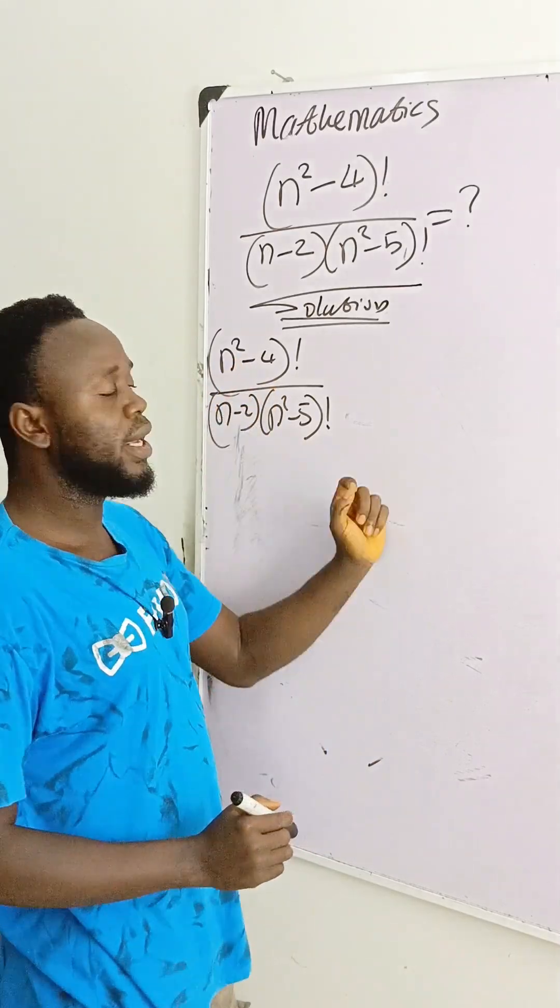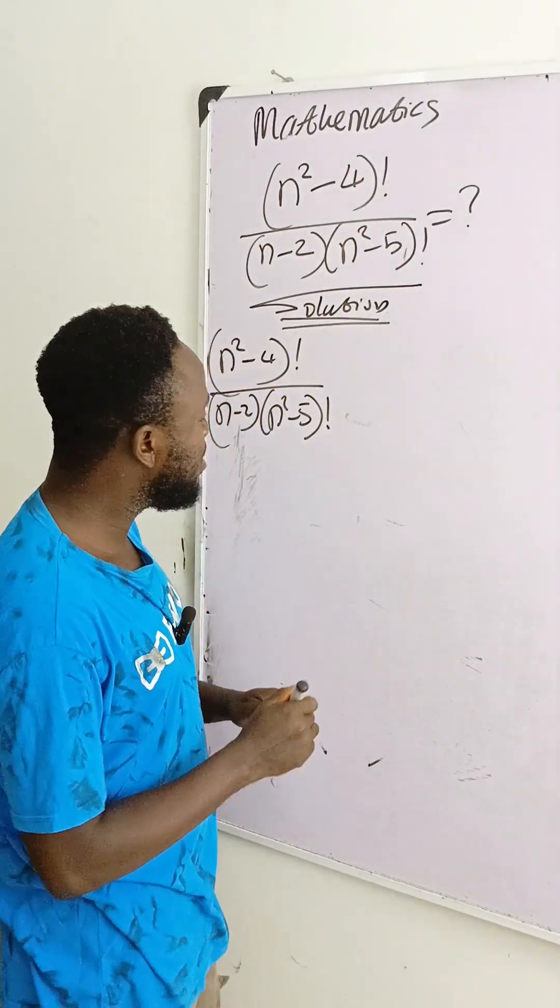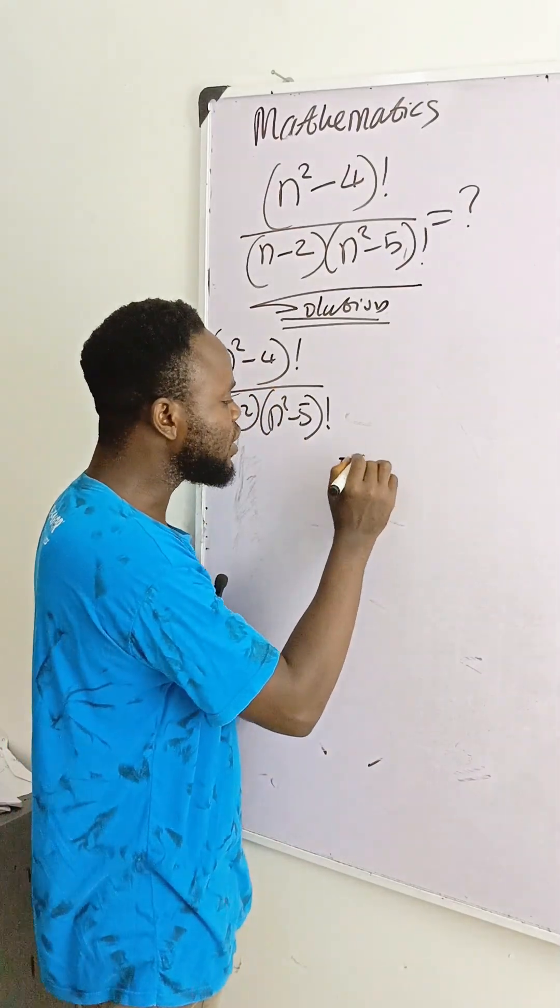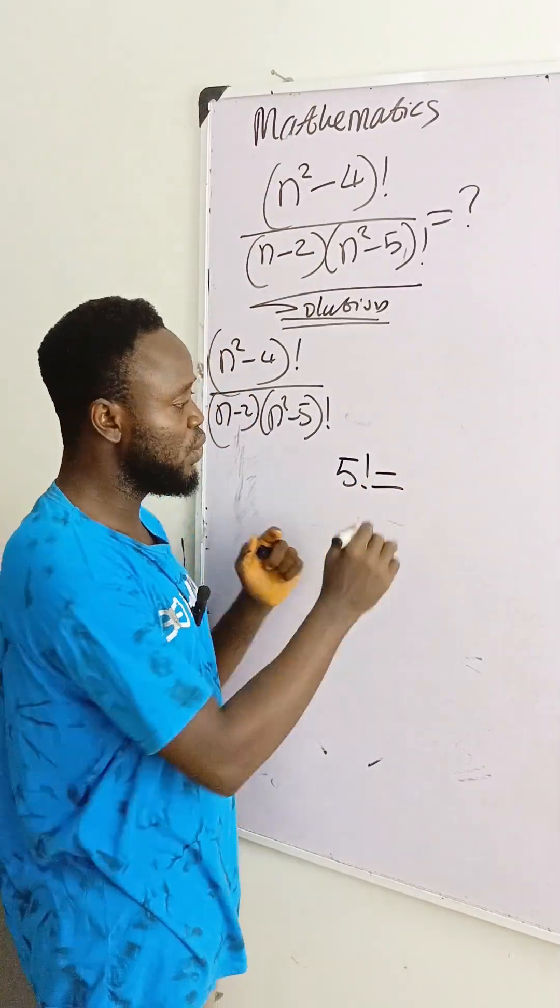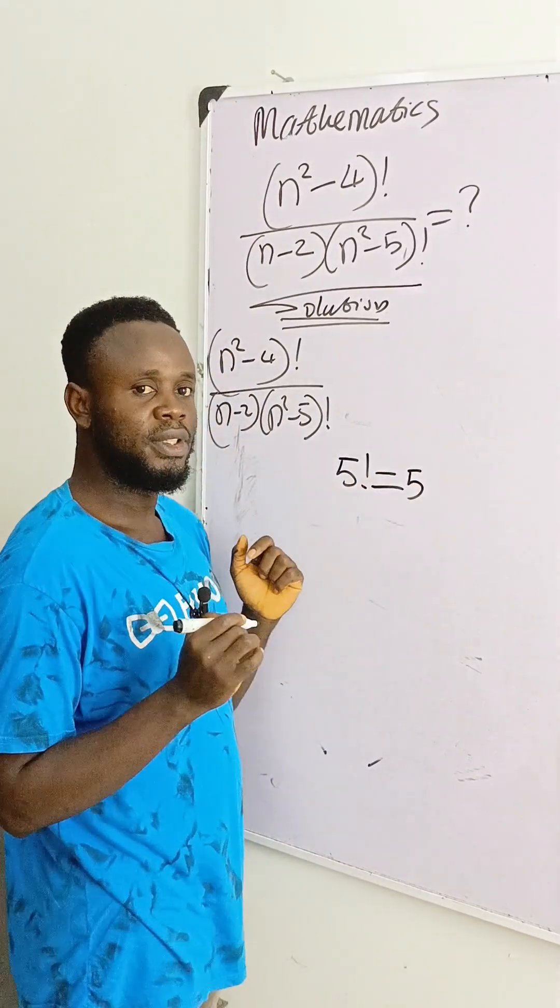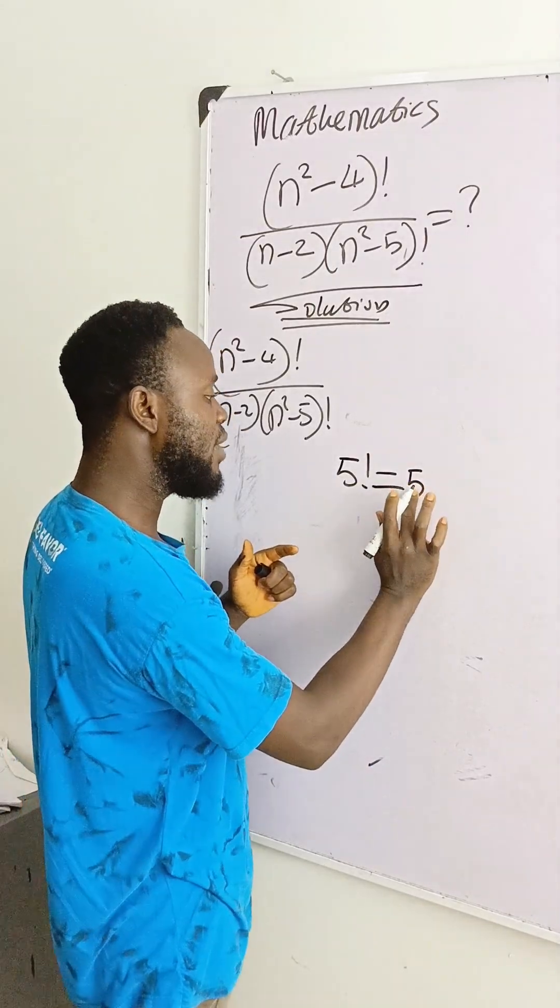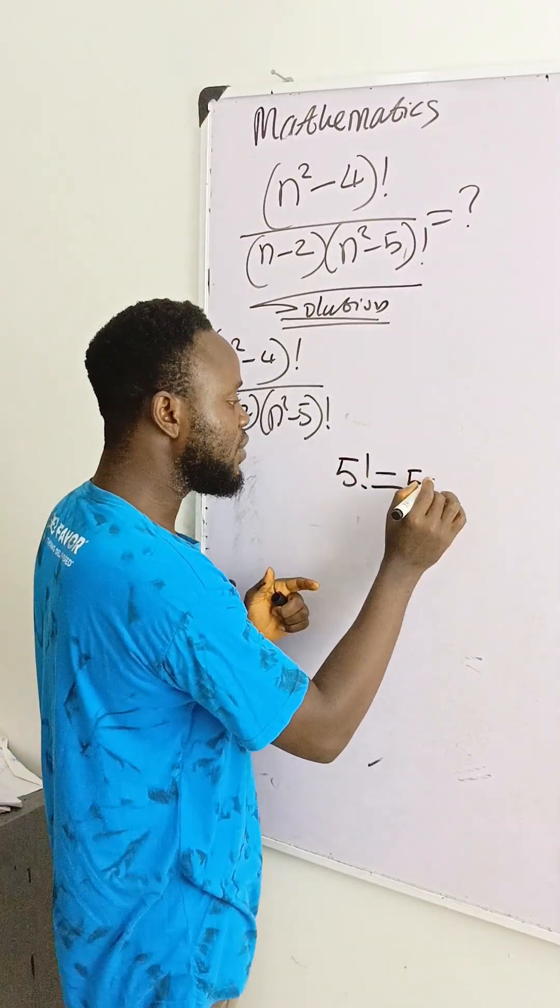Before we go ahead to simplify this problem, remember that when we are talking of something factorial, 5 factorial is equal to—if you want to solve it, you keep 5. You keep multiplying by reducing 1. If you keep 5, 5 minus 1 is 4.